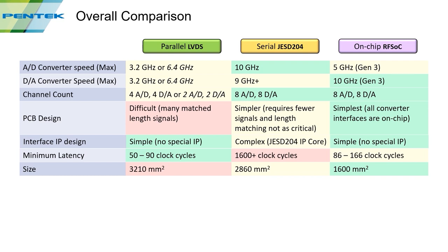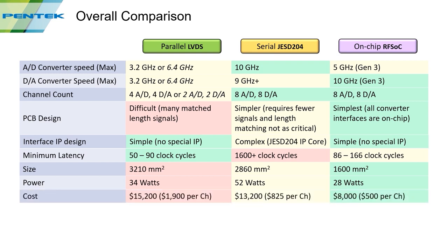Size: RFSOC is smallest, JESD204 next, and parallel LVDS is largest — and that 3,210 mm² is only for a four-channel solution. Power: RFSOC is lowest; JESD204 is higher on a per-channel basis; parallel at 34 watts covers only four channels, so effectively ~68 watts for eight. Cost per channel: RFSOC at $500, JESD204 at $825, and LVDS at $1,900. Overall, RFSOC checks off the most boxes across all parameters.